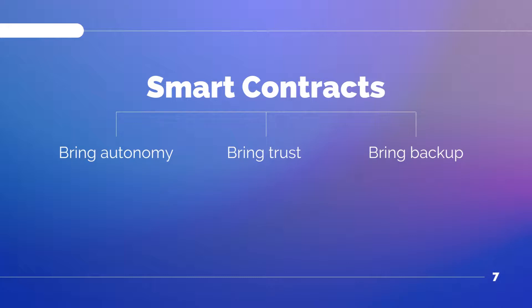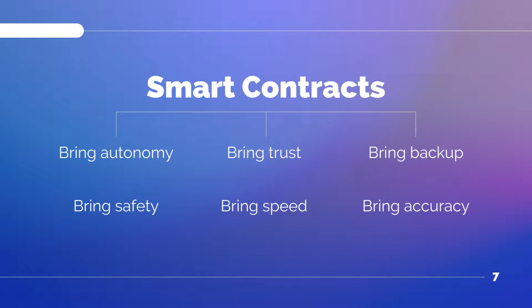Smart contracts bring backup. You can never lose your savings on the blockchain, as well as all your credentials, because all your credentials are stored in multiple locations many times over. So you can always find your files. Smart contracts also bring safety — your documents are always encrypted, which means no one can easily hack them. Safety of your code, files, or data is guaranteed on the blockchain. Blockchain also brings speed: smart contracts utilize code to computerize tasks, avoiding a lot of business processes that would otherwise eat up a lot of time.